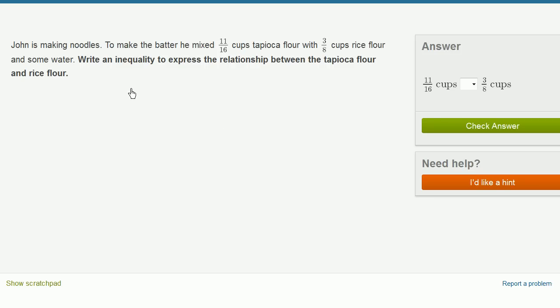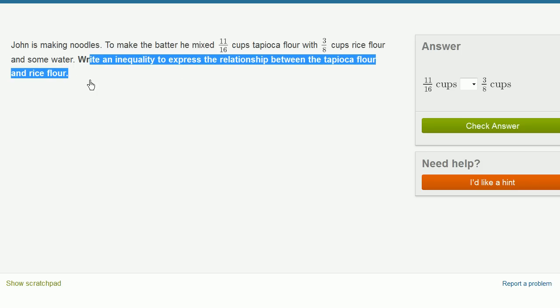John is making noodles. To make the batter, he mixes 11 sixteenths cups tapioca flour with 3 eighths cups rice flour and some water. Write an inequality to express the relationship between the tapioca flour and rice flour.